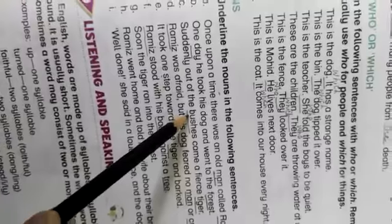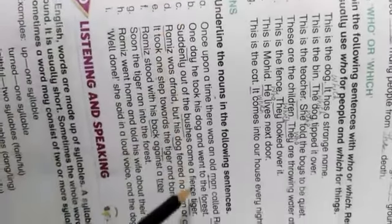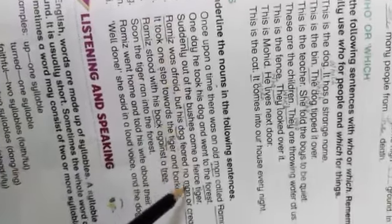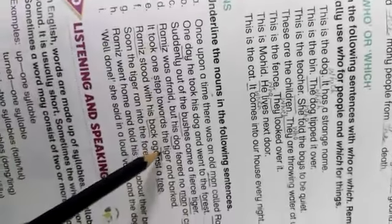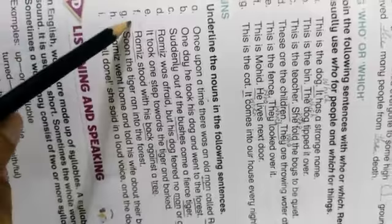In sentence B, underline forest and bushes. In sentence C, underline bushes and tiger. In sentence D, underline Rames and dog, man and creature. It took one step towards the tiger. In sentence E, tiger will be underlined. In sentence F, Rames, back, and tree. In sentence G, tiger.